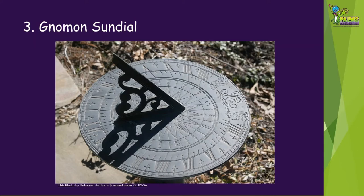A gnomon sundial uses a triangular gnomon or shadow maker to cast a shadow on a base that is divided into angles representing hours. They are often made as a full circle, but today we are only going to make a semicircle gnomon sundial to keep it simple.